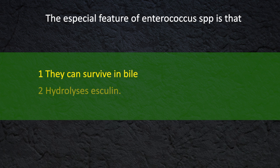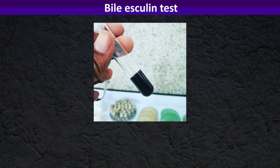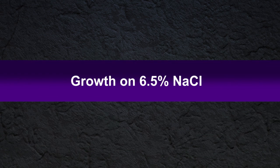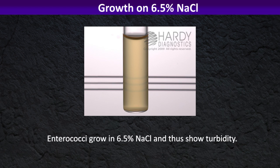The special feature of Enterococcus species is that they can survive in bile and hydrolyze esculin, so we need to do a biochemical test if Enterococci is suspected. Some Group D Streptococcus species can also give positivity in this biochemical test, so to differentiate we can look for growth on 6.5% sodium chloride. Enterococci grow in 6.5% sodium chloride and show turbidity.